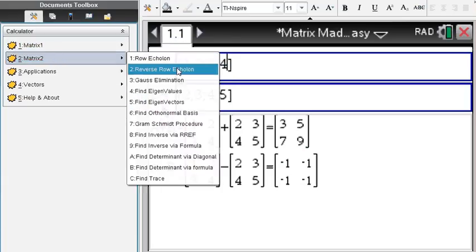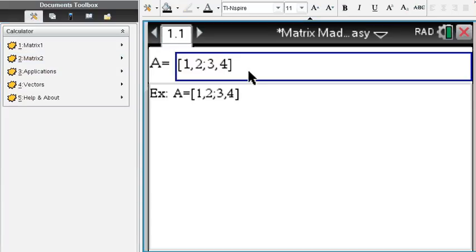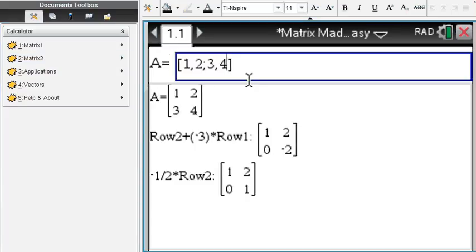Okay, let's do some operations on matrices. Row echelon, still using the same matrix 1 2 3 4. Well you can see we have to multiply the first row by negative 3 and then add the second row to it in order to create a 0 on the bottom.